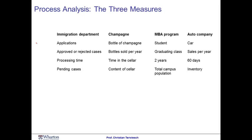Given how important these three definitions are, let's practice them with four examples. Consider first an immigration process. The flow unit would be a visa application. The flow rate would be the total number of visa applications approved or rejected in a given period of time. The flow time would be the processing time — how long a visa applicant had to wait for their visa. And the inventory would be the number of pending cases. Next, consider the production of champagne. The flow unit would be a bottle of champagne. The flow rate would be the bottles sold every year. The flow time would be the time that the champagne sits in the cellar before it is sold. And the inventory would simply be the content of the wine cellar.